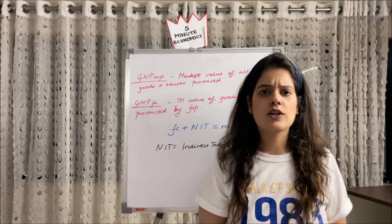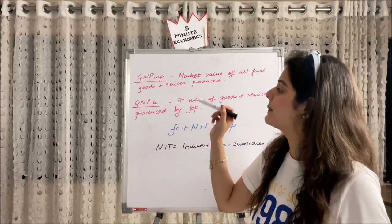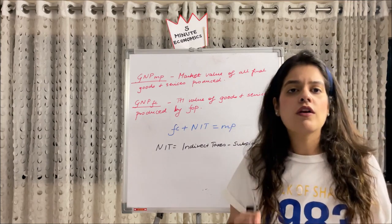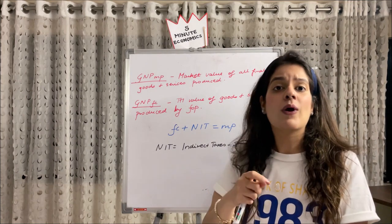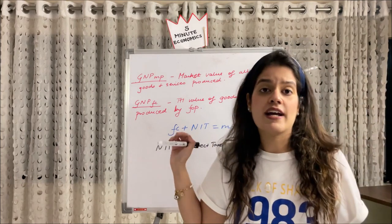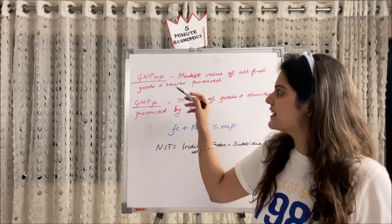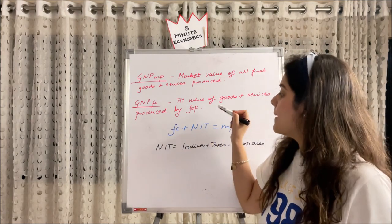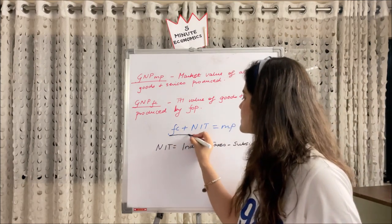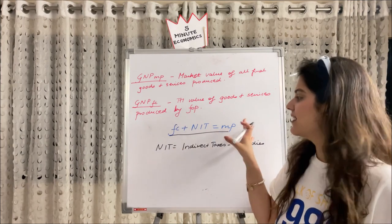Now moving to GNP at Market Price (MP) versus GNP at Factor Cost (FC). MP is the market value of all final goods and services — the price at which the product comes to market. FC is the total value of goods and services produced by Factors of Production — land, labour, capital and entrepreneur — in the form of wages, rent, interest and profit. The formula to move from FC to MP is: FC + NIT (Net Indirect Taxes) = MP. This formula is always important. Mathematically, NIT = MP − FC.